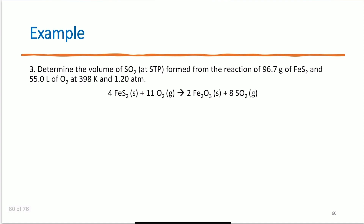Determine the volume of SO2 at STP formed from the reaction of 96.7 grams of FeS2 and 55.0 liters of O2, where the O2 is at 398 K and 1.20 atmospheres. I need to find volume of SO2 at STP — 1 atmosphere, 273 K. This is a limiting reactant problem, so I need moles of both reactants.